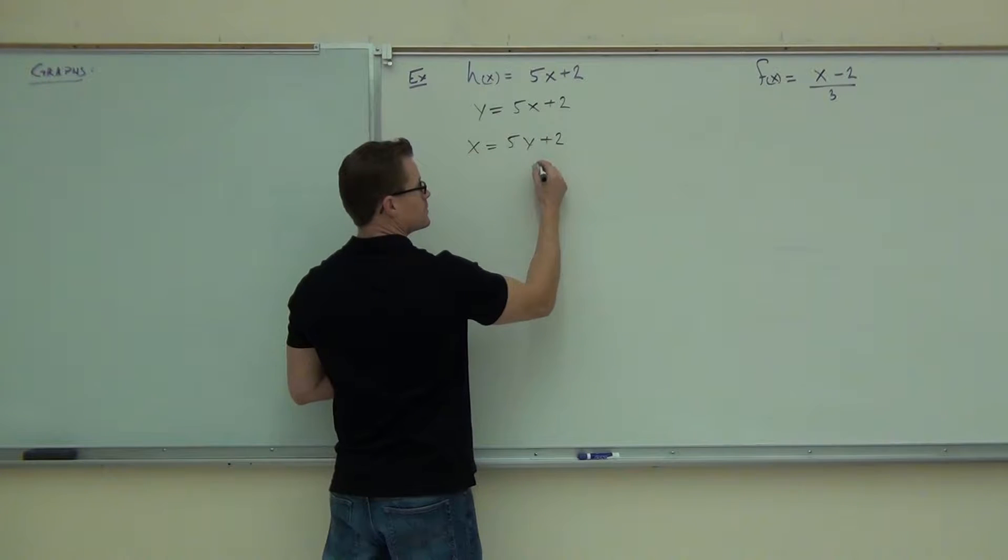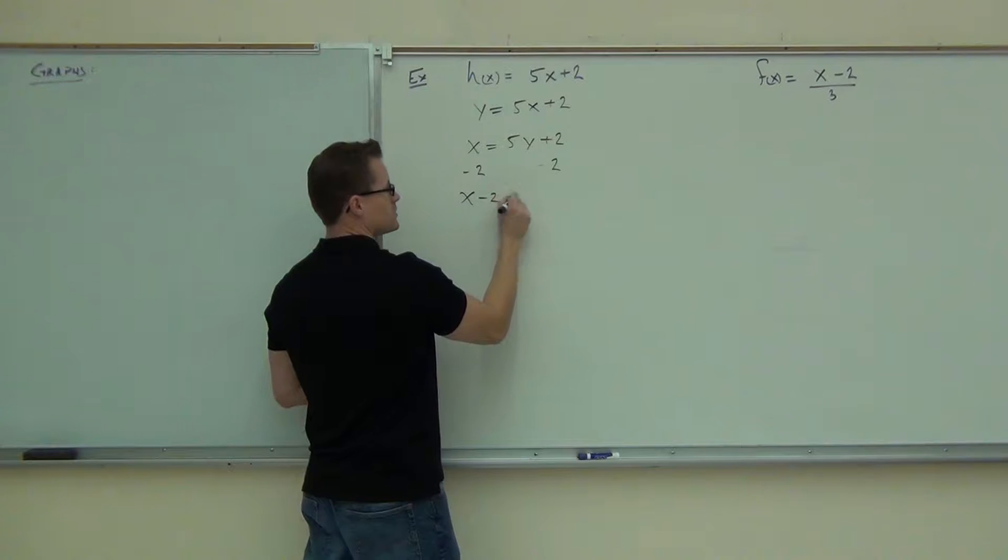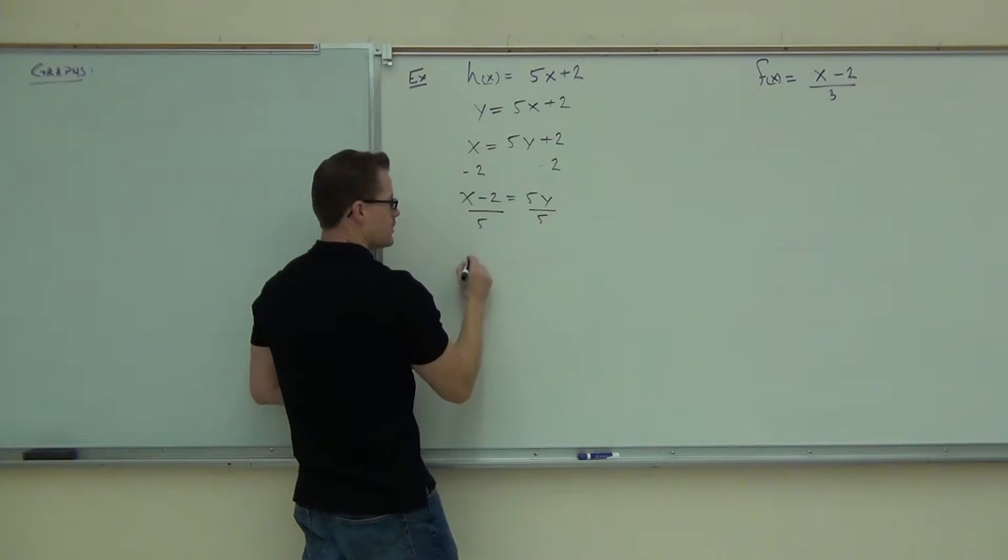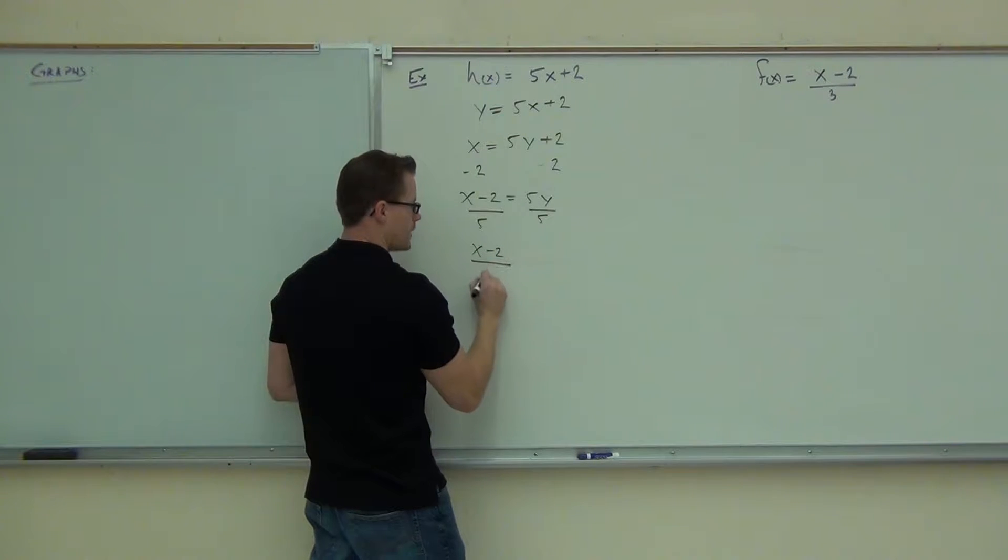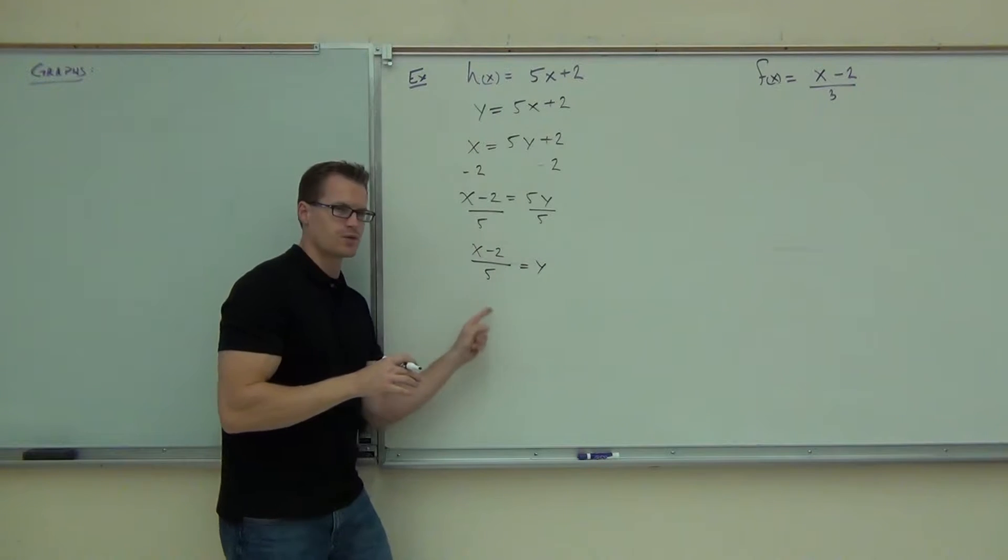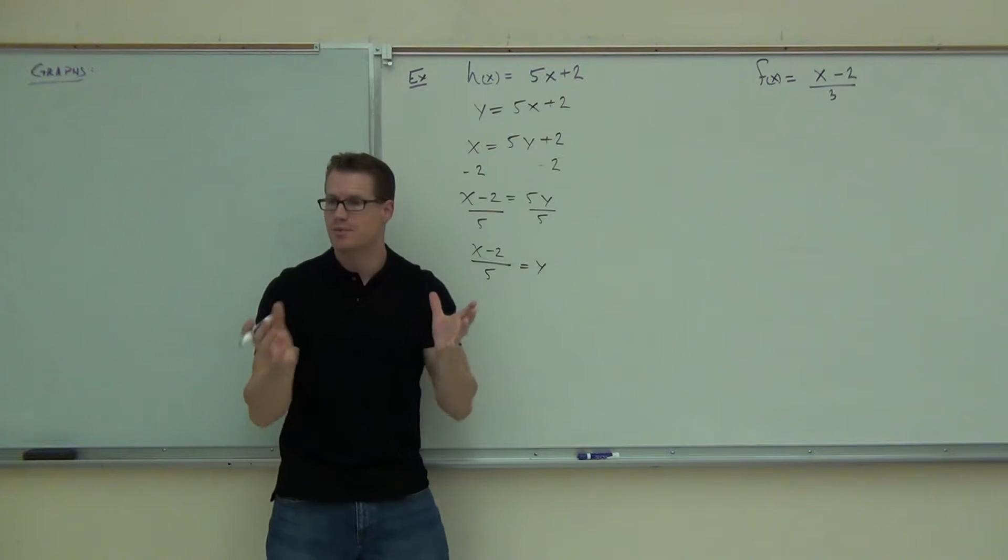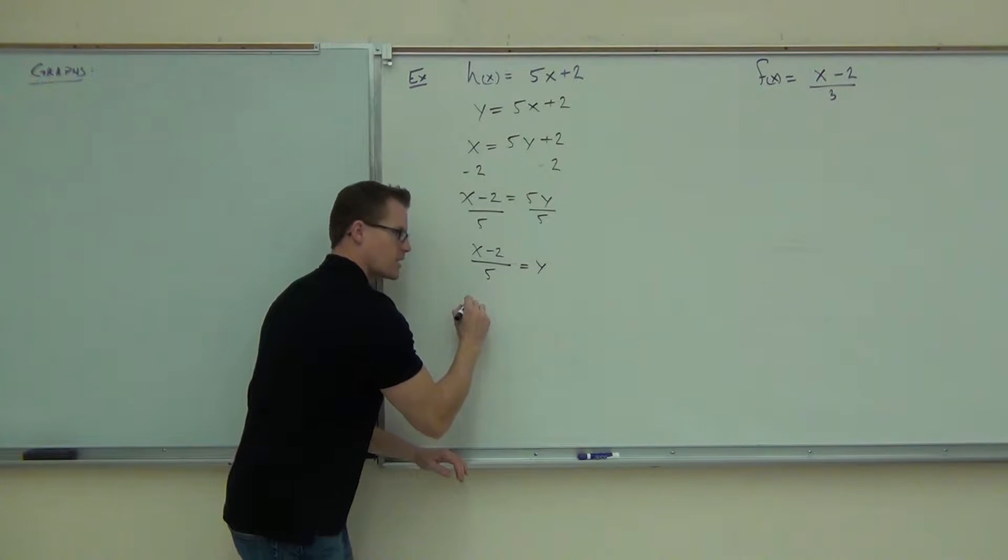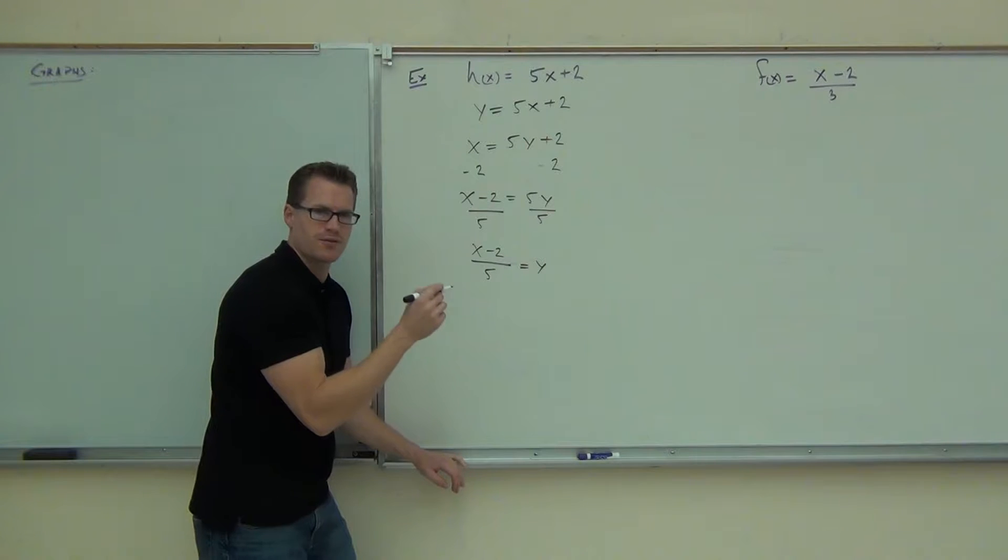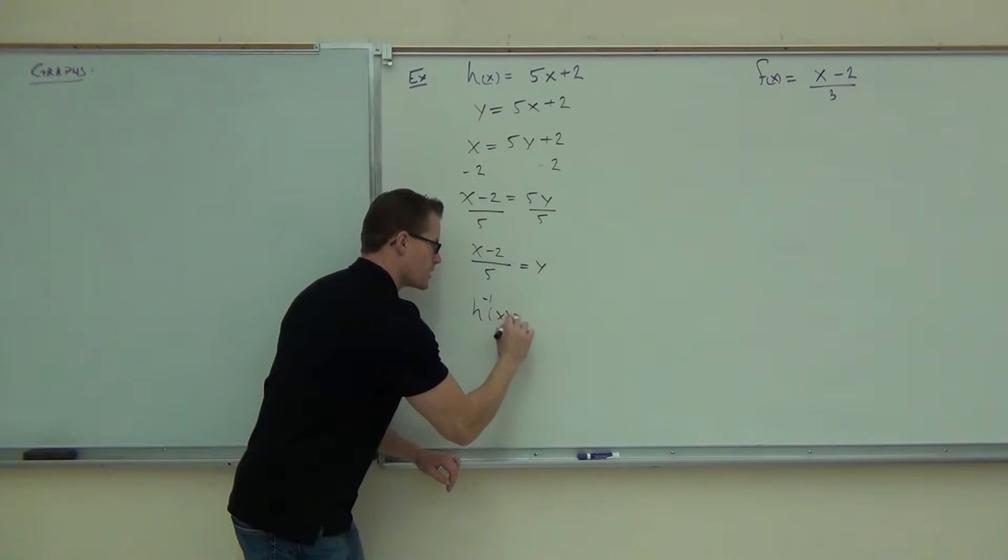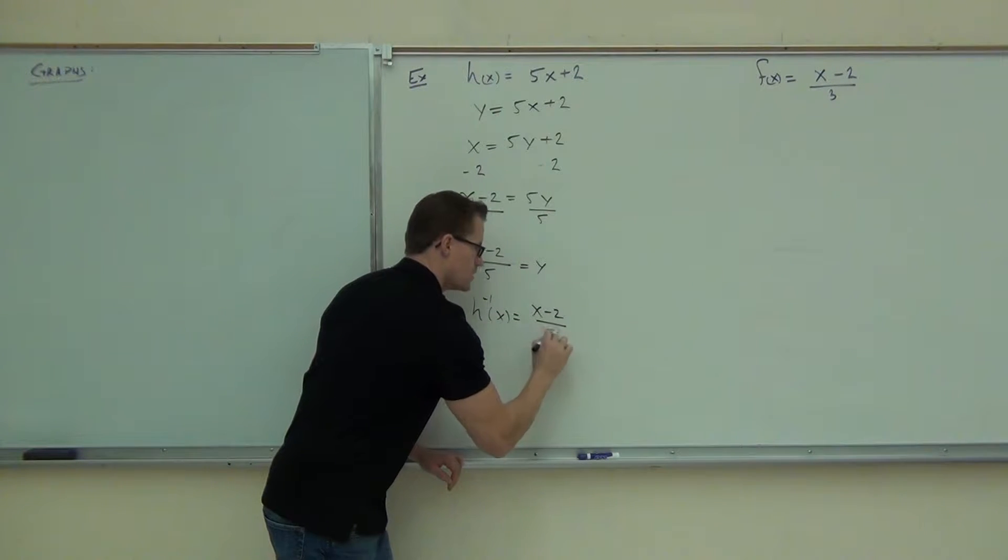So now we would subtract 2 because we're trying to get y by itself here. x minus 2 equals 5y. Of course, we're going to divide by 5. We get x minus 2 over 5 equals y. But we're not going to leave it. We know that this part right here, that is the inverse. That's undoing what that function's doing. That's what's happening here. That's why we're doing this thing. We just got to call that the inverse. So in our case here, we're not going to have f of x or g of x. We're going to have h inverse of x. So h, that little negative 1 is pronounced inverse of x. That's x minus 2 over 5.